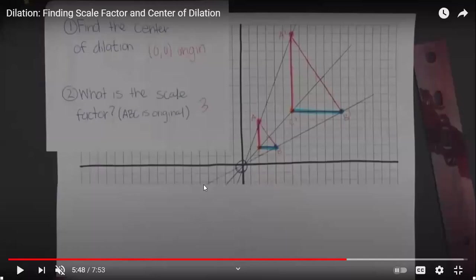We can also find the scale factor using the coordinates of the vertices. Counting to reach point C: it is 2 units right and 2 units up. For C', it is 6 units right and 6 units up. Dividing the x-coordinates: 6 divided by 2 equals 3. Dividing the y-coordinates: 6 divided by 2 also equals 3. So we have two different ways to find the scale factor — using the coordinate positions or using the ratio between the two sides.